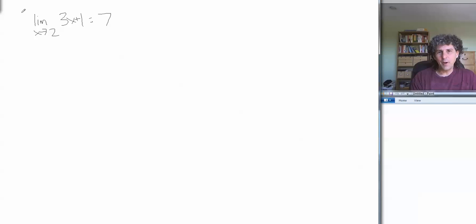Now hopefully you already know that if we have a polynomial, polynomials are defined everywhere, and so the limit of a polynomial as you approach some specific value is just plug the value in. In other words, 3 times 2 plus 1 is 6 plus 1. So we could be done,